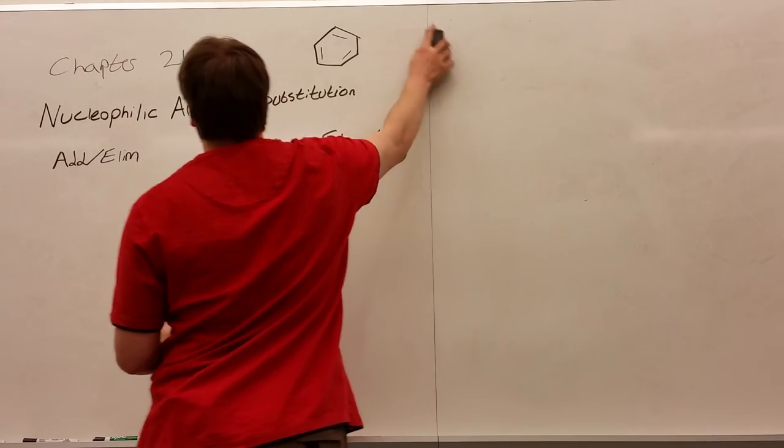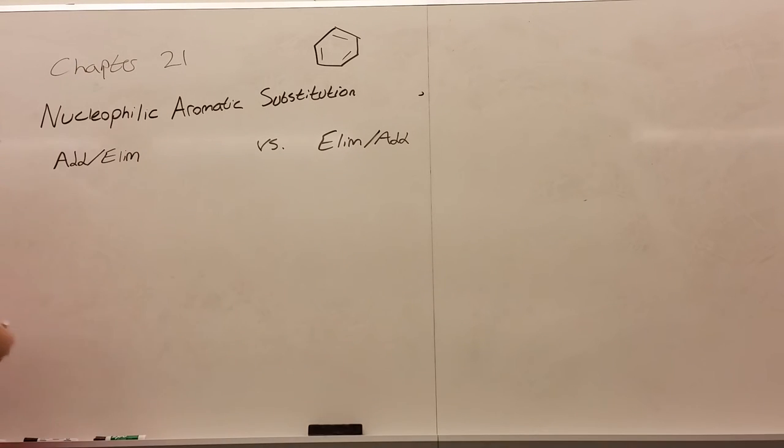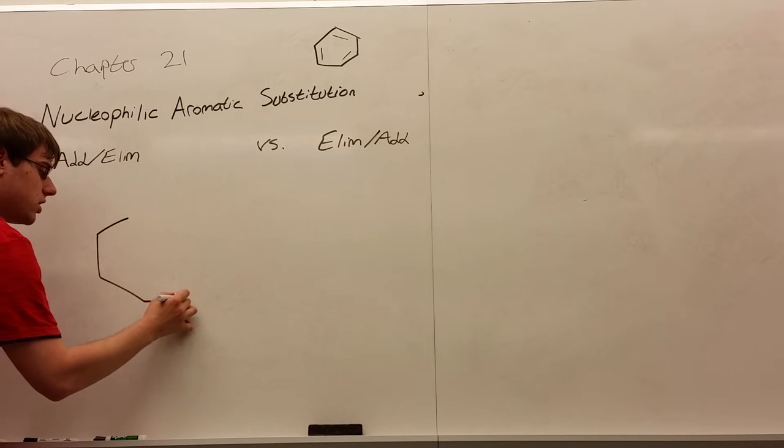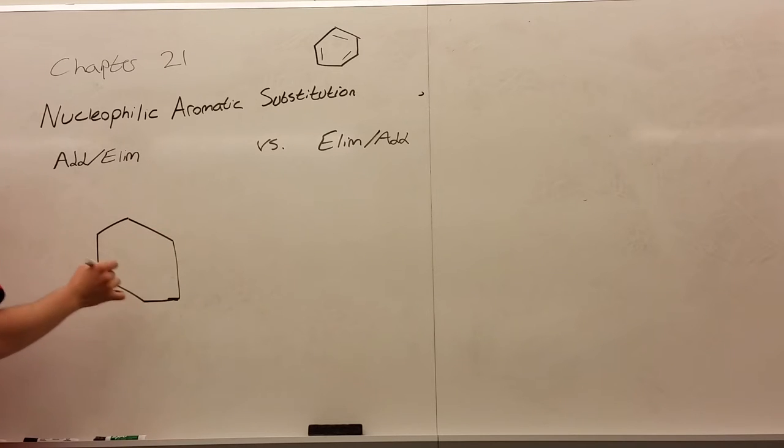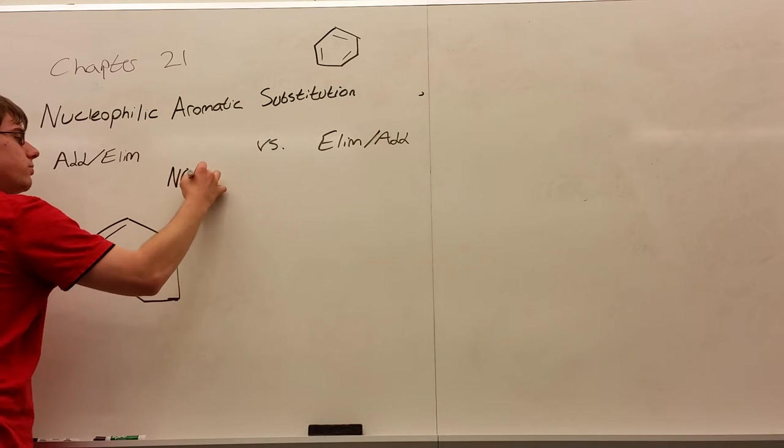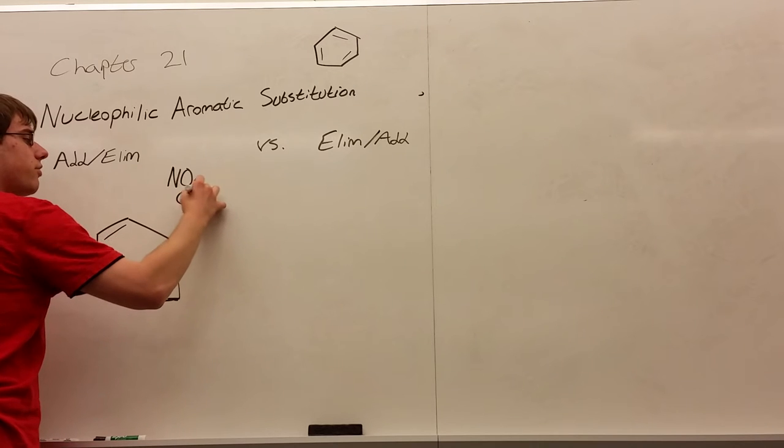So let's start with the easier one, the addition-elimination mechanisms. First of all, addition-elimination, let's start by just drawing a benzene ring. In general, addition elimination reactants will always involve a benzene ring that has some kind of good withdrawing group in it. Your most common examples being NO2 or CF3.